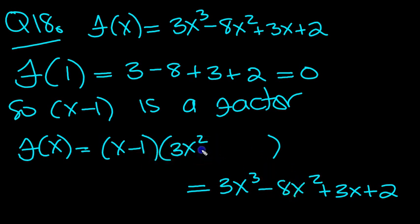We have minus 8x squared, so I need a minus 5x next. And that will combine with that to give minus 5x squared, making a total of minus 8x squared. But it will also produce a plus 5x. I've got plus 3x, so I'll need a minus 2. That will go with that to give minus 2x, and then I'll be left with the plus 2 at the end.